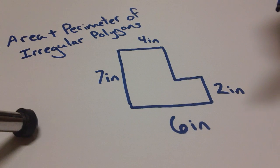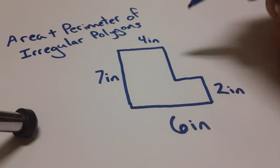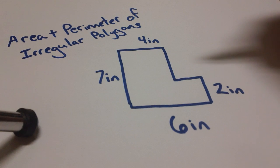Now we have four inches, seven inches, six inches, two inches. But unfortunately we have two sides here whose lengths are missing, right? So we've got to figure those out.